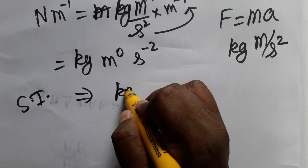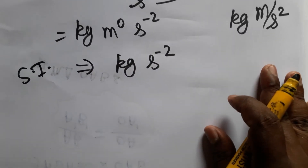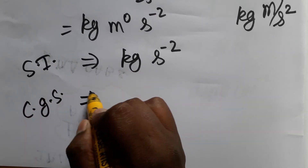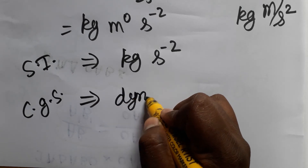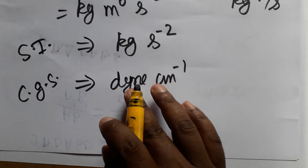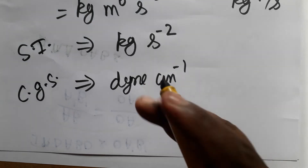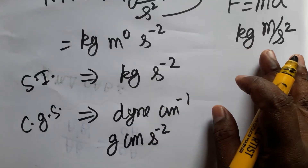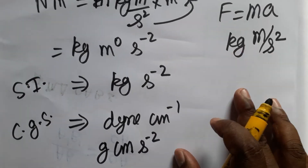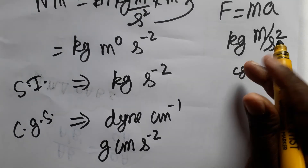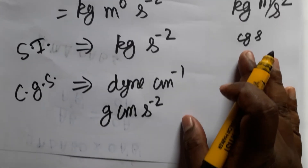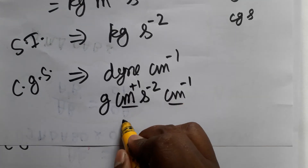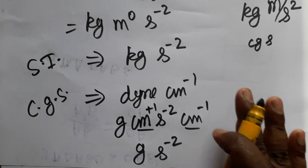So the final SI unit of surface tension is kg·s⁻². In the CGS system — centimeter, gram, second — the unit is dyne·cm⁻¹. Dyne is the force unit in CGS, equal to g·cm·s⁻². Multiplying by cm⁻¹, the centimeter terms cancel (plus one and minus one), giving gram·s⁻² as the surface tension unit in the CGS system.